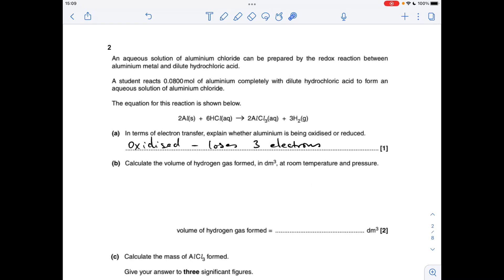Question two, in terms of electron transfer, the aluminium has been oxidised. It's gone from the aluminium atom to the aluminium 3 plus ion in the aluminium chloride, so it's obviously lost three electrons to do that. Remember oxidation is loss of electrons, but you would need to specify the amount.